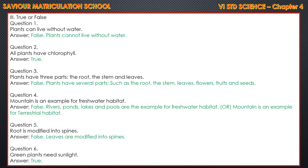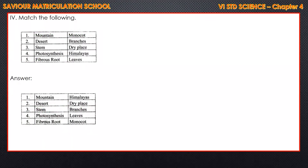Question 6: Green plants need sunlight. The correct answer is true. Next section — match the following. First one: Mountain — the correct answer is Himalayas. Next one: Desert — answer is dry place. Third one: Stem — answer is branches.